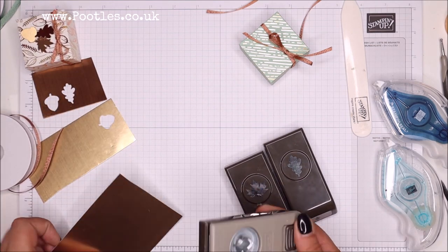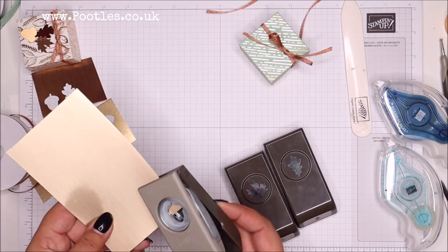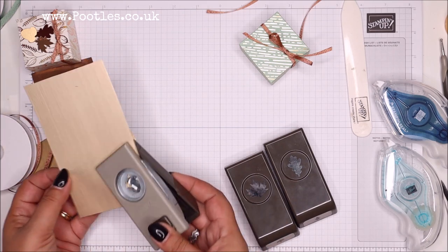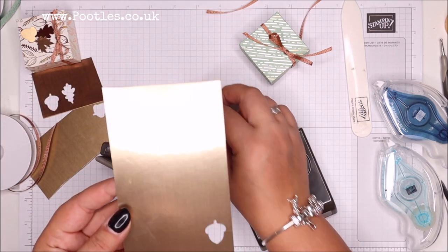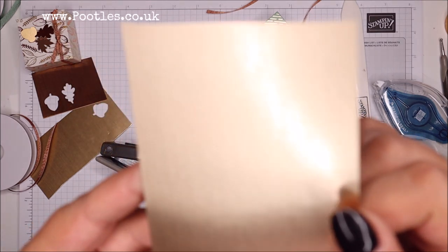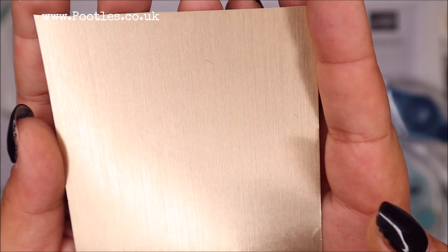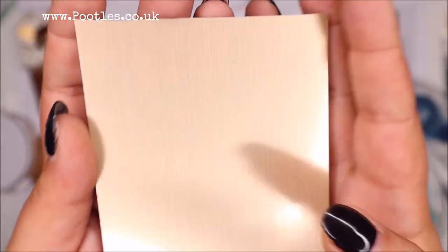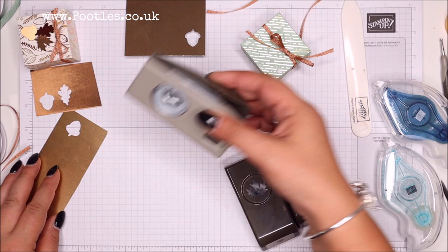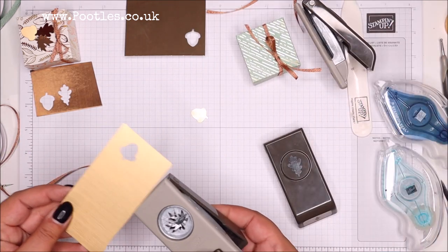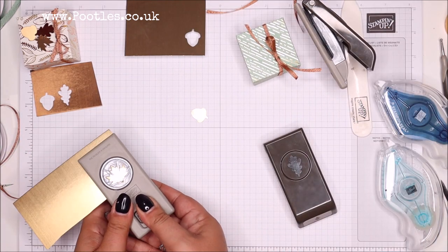There is a stamp set that comes with it. Actually I haven't really used the stamp set all that much. I've mostly just gone punching. Here's my gilded autumn and my brushed metallic. I'm trying to get it so you can see those stripes now.